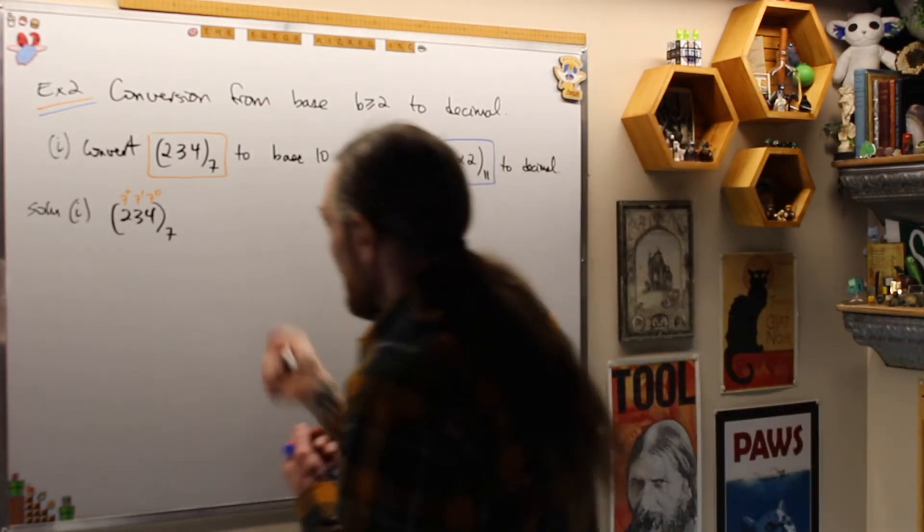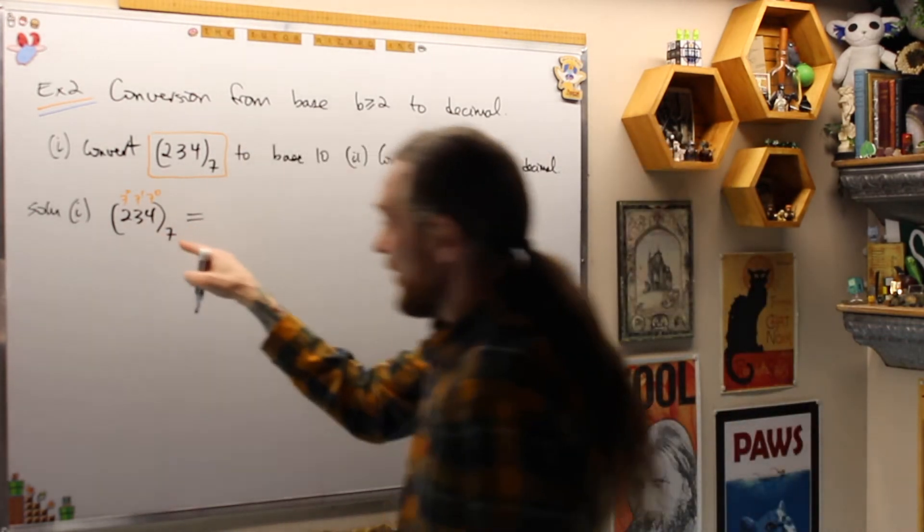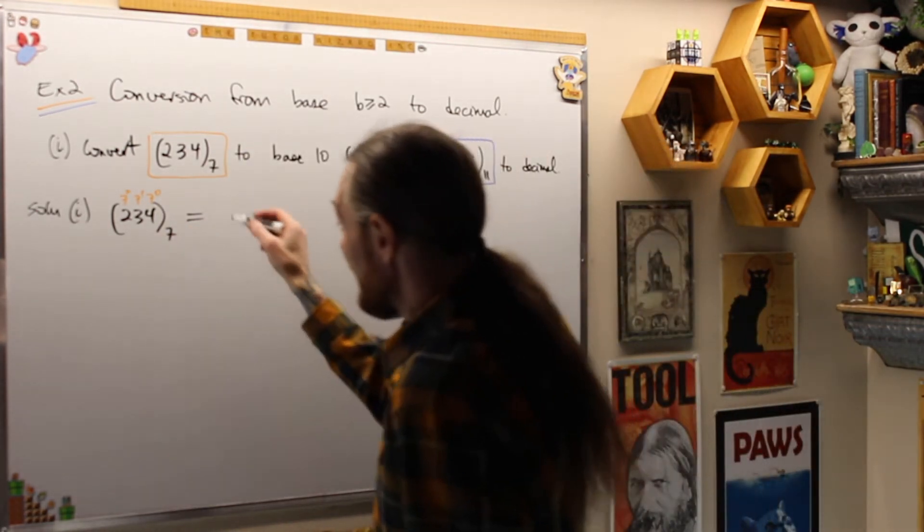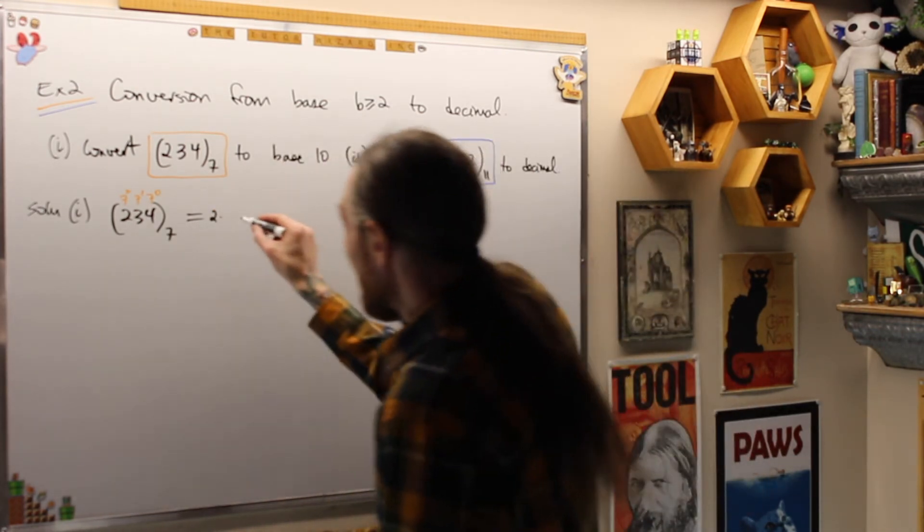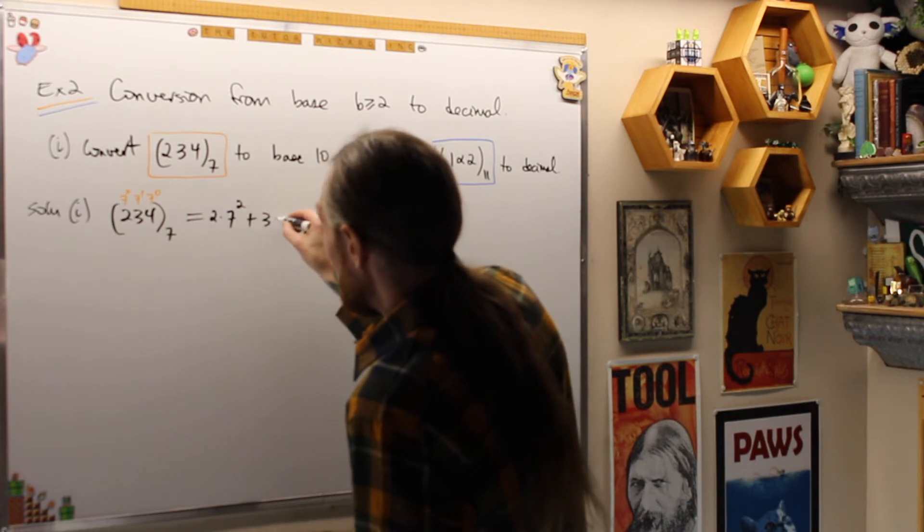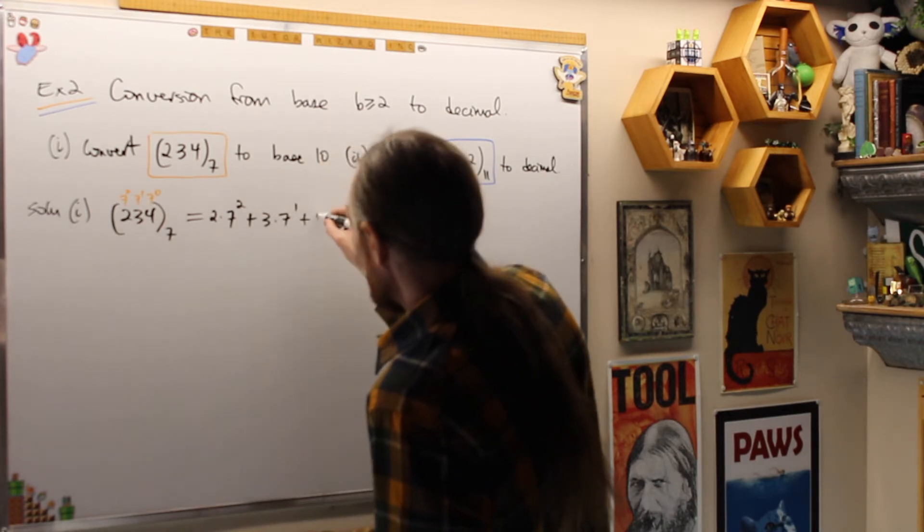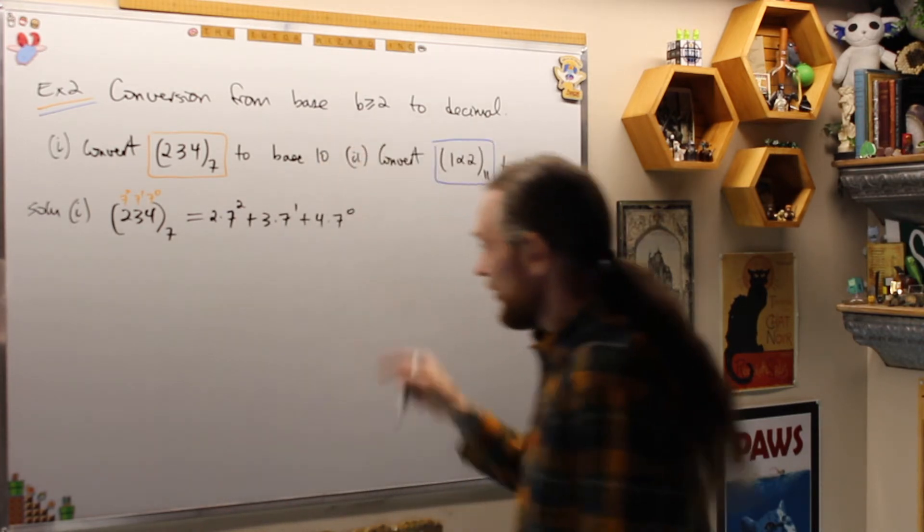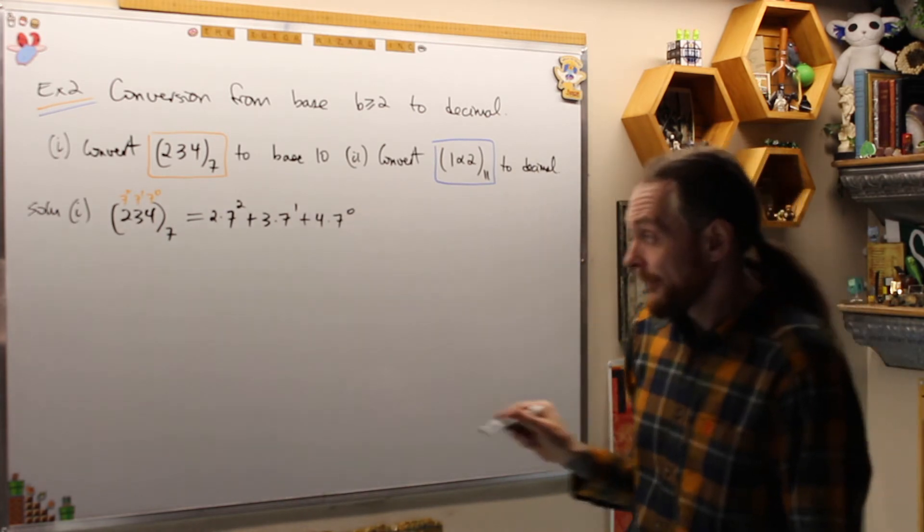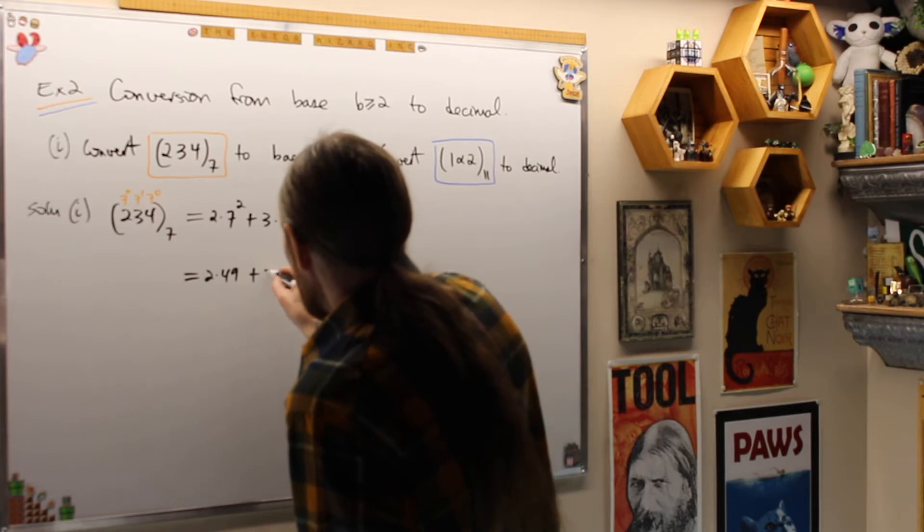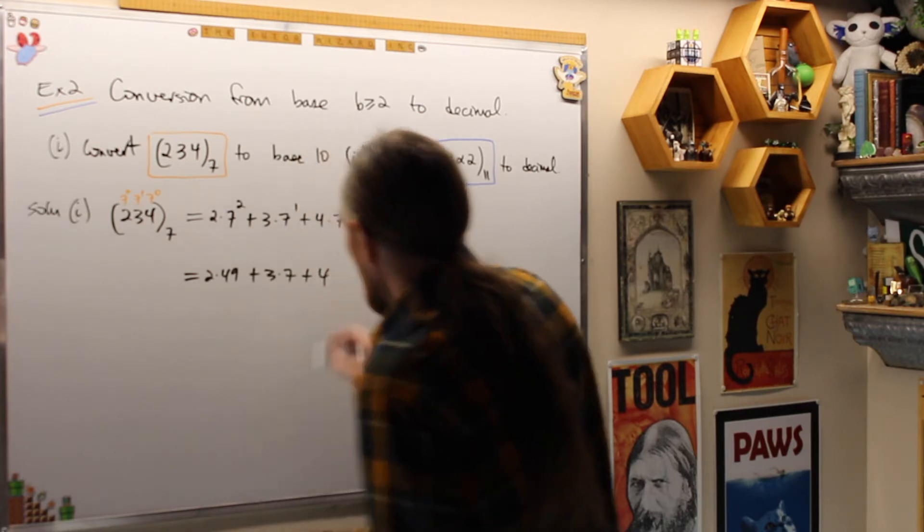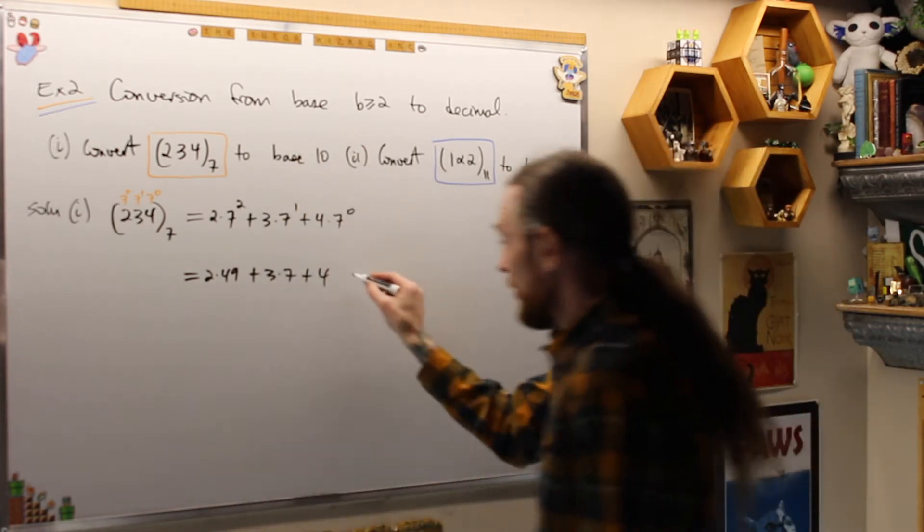So this is going to be 2 times 49 plus 3 times 7 plus 4, which is going to be equal to 98 plus 21 plus 4. And if you can't see it, you're going to do a side calculation. We're going to have to do this in a different base right away anyways.